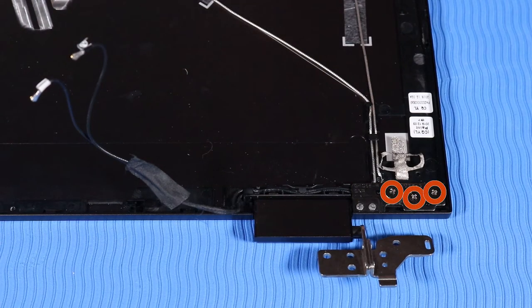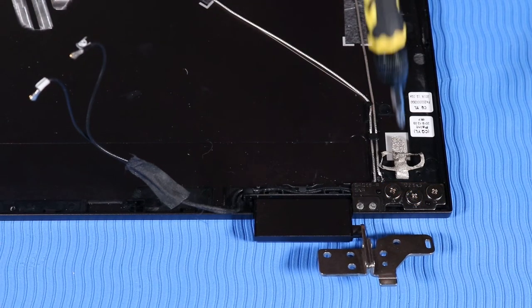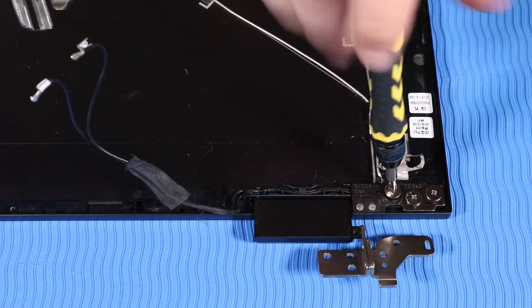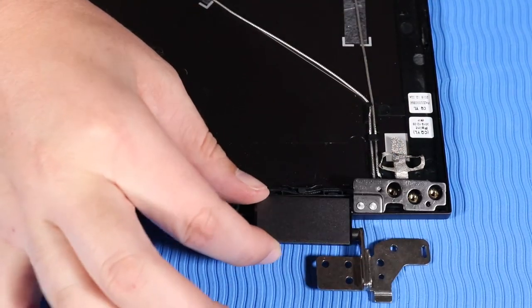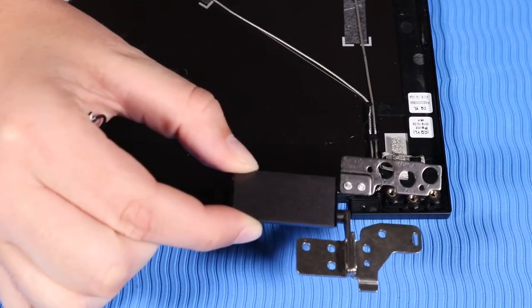Remove the three P1 Phillips broad-head screws that secure the right hinge to the display enclosure. Lift the right hinge off of the alignment pins on the display enclosure and remove.